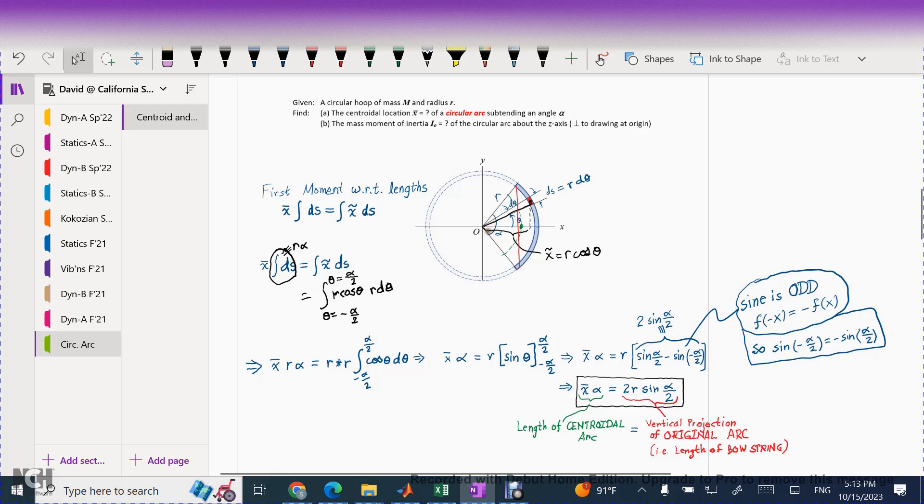So the x bar location, I've tried to indicate with that little green dot. It's measured from all the way horizontally out to that green dot. That is my x bar. And if you think about it, x bar times the subtended angle of alpha is the centroidal arc length, which I'm trying to show on the dashed green lines here. So the length of the centroidal arc, which is x bar times alpha, is exactly equal to the vertical projection of that original arc. Here's the original arc. If I were to project it vertically, it would be this height, which you might think of as the bow string. Imagine you're using a bow and arrow. This is your bow. The string on that bow has a height, which is given by 2 times r times sine of alpha over 2.